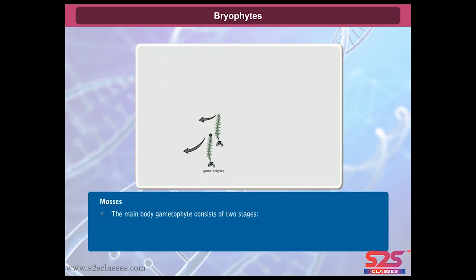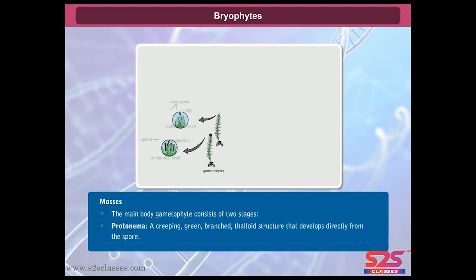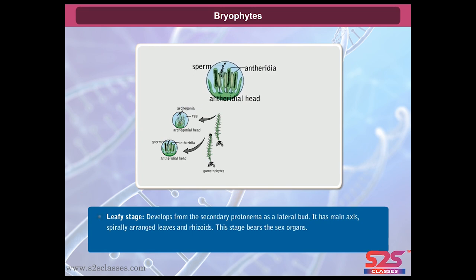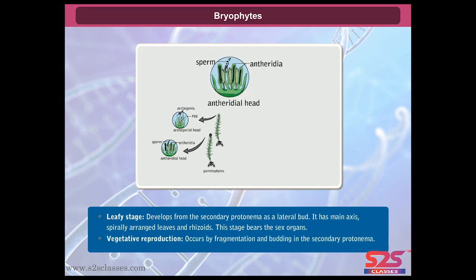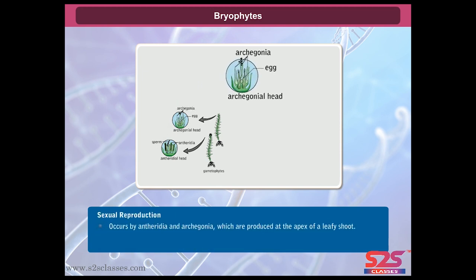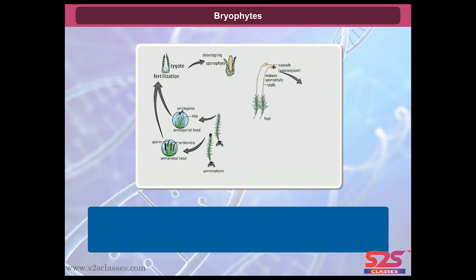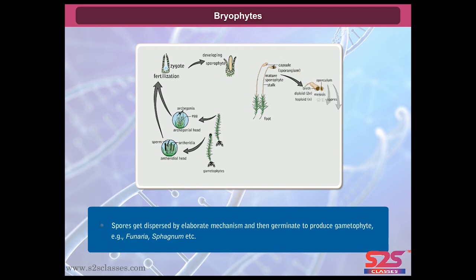Mosses: The main gametophyte body consists of two stages. The protonema is a creeping, green, branched thaloid structure that develops directly from the spore. The leafy stage develops from secondary protonema as a lateral bud, and has a main axis, spirally arranged leaves, and rhizoids — this stage bears the sex organs. Vegetative reproduction occurs by fragmentation and budding in secondary protonema. Sexual reproduction occurs by antheridia and archegonia produced at the apex of the leafy shoot. The zygote develops into a sporophyte with foot, seta, and capsule. Capsule contains spores formed after meiosis, dispersed by an elaborate mechanism to germinate into gametophytes. Examples: Funaria, Sphagnum.